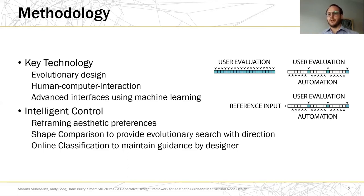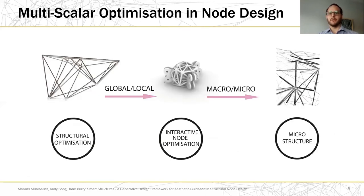Online classification predicts the aesthetic preferences of the designer during automated phases. The application in multiscalar optimization and node design allows such a system to operate on three different levels: structural optimization on the global scale of the structural system, or the local scale of the node, and in the context of node design, on the macro level of the node itself and the microstructure inherent to the node.